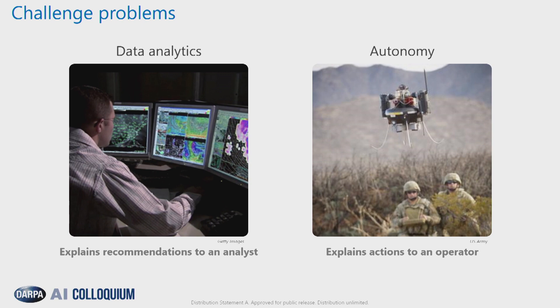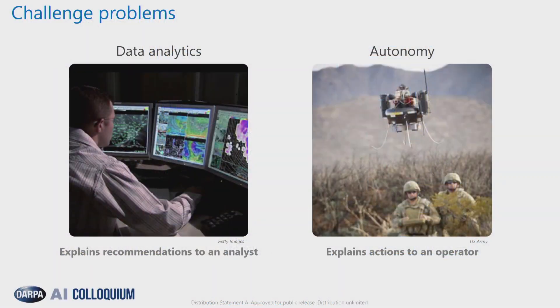The XAI performers are focusing on two types of challenge problems: data analytics, shown on the left, and autonomous control, shown on the right. With respect to data analytics, one example is an intelligence analyst working with a machine learning-enabled AI system that looks at imagery to identify objects, activities, or threats. The system provides recommendations to the analyst, and the analyst needs to understand and trust those recommendations and predictions.